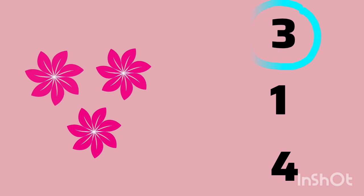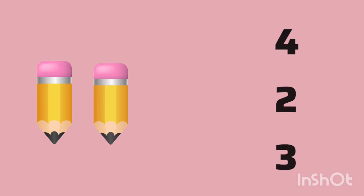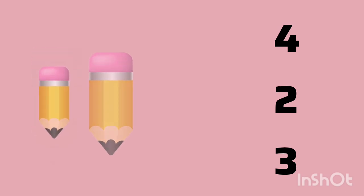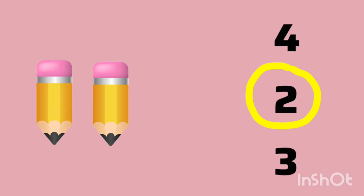Now next, some objects and numbers are given. You have to count the object and circle the number. Let's count. 1, 2. 2 pencils. So you have to circle the 2 number. Circle number 2.